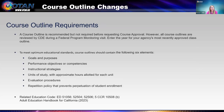Course outline requirements: course outlines are recommended but not required before requesting course approval. If you are a WIOA 2 funded agency and have a federal program monitoring visit (FPM), your CDE consultant will request to see your course outlines on file. There are six recommended components for course outlines: the goals and purpose of the course, the performance objectives or competencies, the instructional strategies, the units of study and approximate hours to complete each unit, the evaluation process, and the repetition policy — telling how many times a student can retake a particular course.